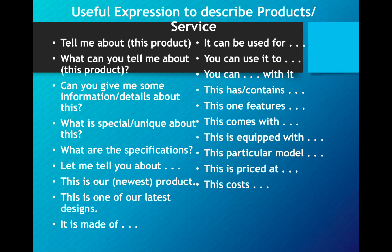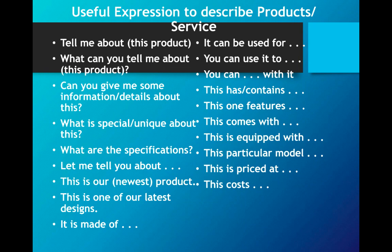Here are some useful expressions to describe products and services. When asking about a product you can say: tell me about this product, what can you tell me about this product, can you give me some information about this, what are the special features, what is so unique about this product, what are the specifications, what is the warranty period, or how long do you have after-sales service? If you are the person describing, you can use phrases such as: it can be used for, this contains, this features, this is equipped with, this particular model has, or this is priced at a certain cost.